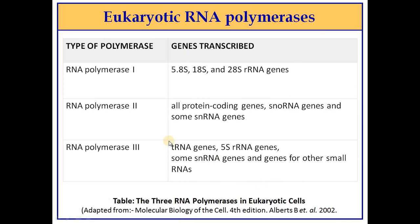There are three different types of RNA polymerase involved in transcription in eukaryotes: RNA polymerase 1, 2, and 3, each transcribing different types of genes. RNA polymerase 1 transcribes the 5.8S, 18S, and 28S rRNA genes. RNA polymerase 2 transcribes all the messenger RNAs, snRNAs, and some snoRNAs. RNA polymerase 3 is responsible for transcription of tRNAs, 5S RNA genes, some small nuclear RNAs, and other small RNA genes.